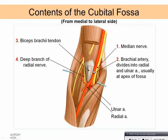The contents of the cubital fossa from medial to lateral are: the median nerve, the brachial artery, the biceps brachii tendon, and the deep branch of the radial nerve. You can remember this as M-B-B-R: M for median nerve, B for brachial artery, B for biceps brachii tendon, and R for radial nerve.